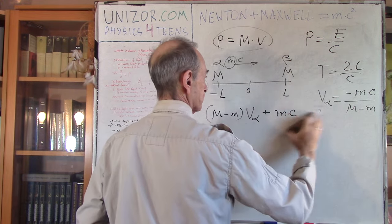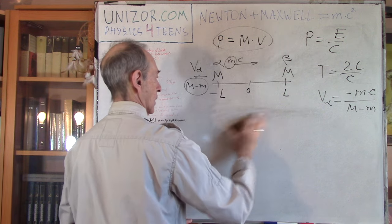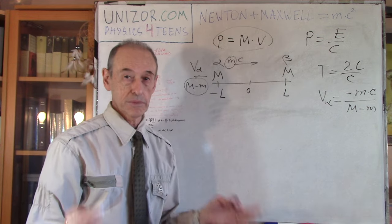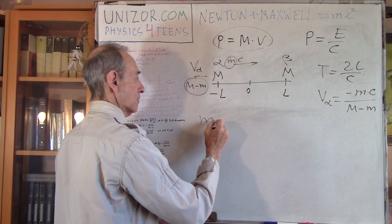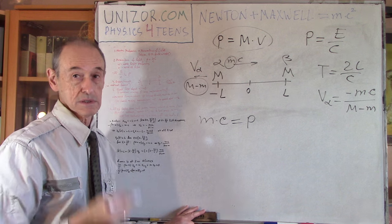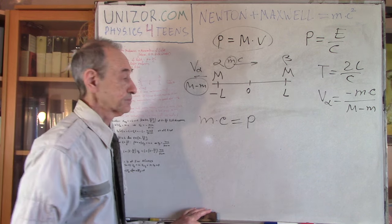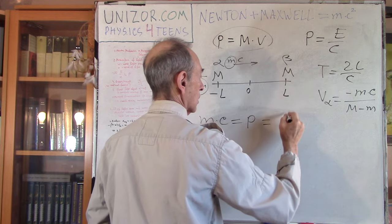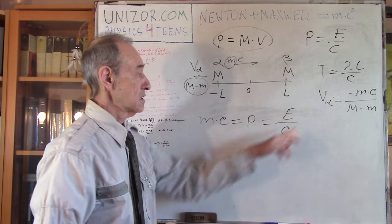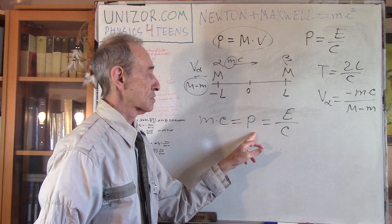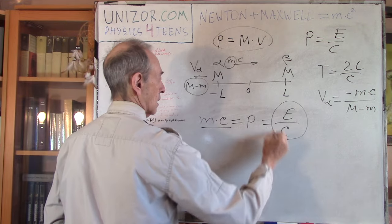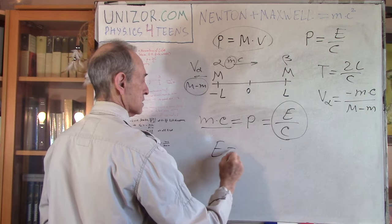From that we can conclude that v-alpha equals negative mc divided by (M minus m). Now, considering classical mechanics: if something has mass m and speed c, then its momentum is mass times speed. At the same time, we know that this particular light carries energy E and it's related to the momentum by the formula, from which follows E equals mc squared.